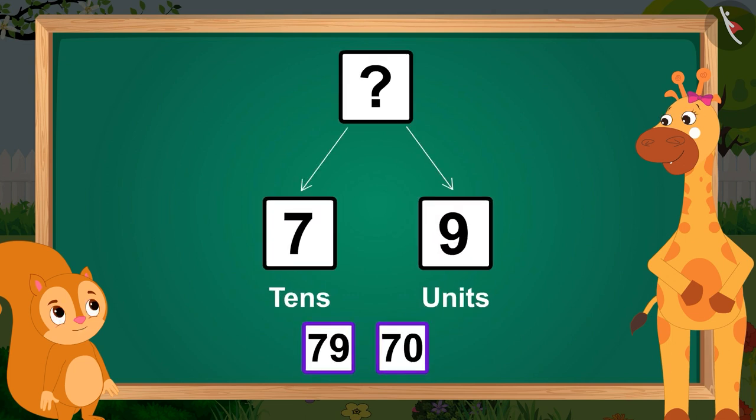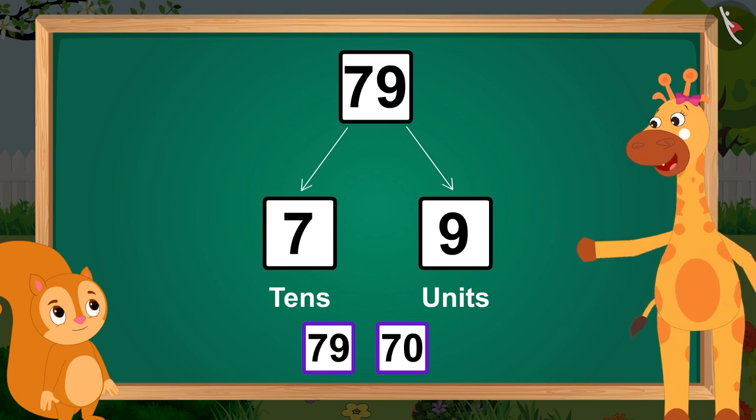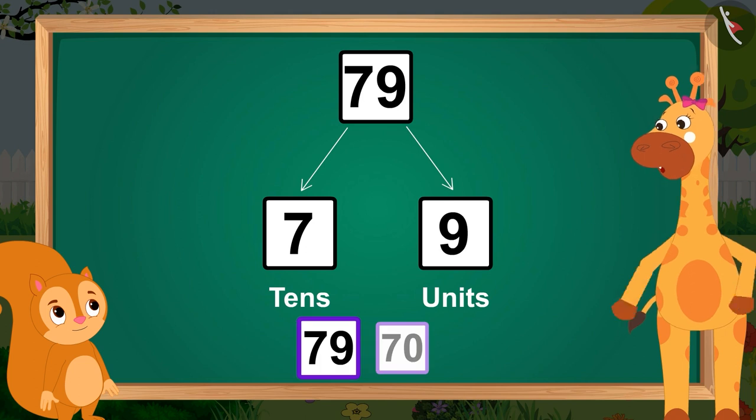Now, tell me, what will seven tens and nine units make up? This will become seventy-nine. The first option is correct.